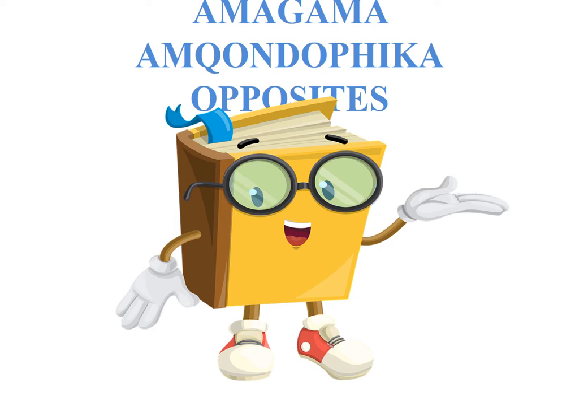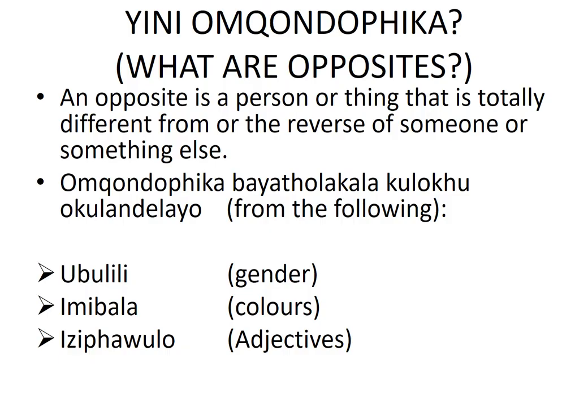What are opposites? An opposite is a person or a thing that is totally different from or the reverse of someone or something else. We're getting opposites also from the following categories.